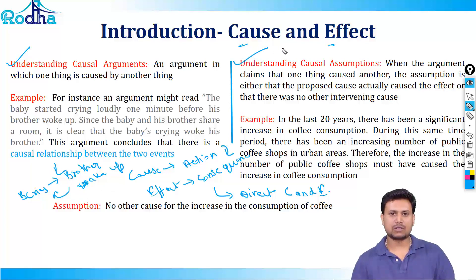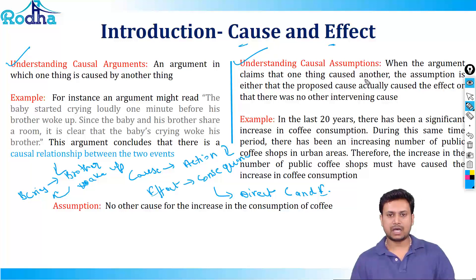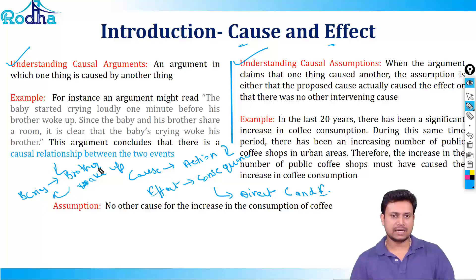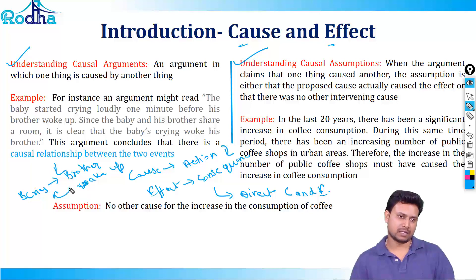Similarly, for every causal argument you will have a causal assumption. When an argument claims that one thing caused another, the assumption is either that the proposed cause actually caused the effect, or that there was no other intervening cause. Basically, we are assuming that nothing else is leading to the effect, or that the cause is directly leading to the effect.